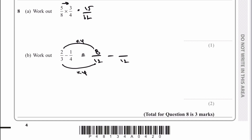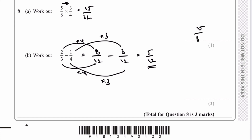Three times four equals 12, so I'm going to multiply 2 by 4, giving me 8. Then I've got minus a quarter — times by 3 — giving me 1 times 3 which is 3 at the top. So 8 minus 3 gives me 5 over 12. So the first answer is 15 over 32, and the second one is 5 over 12.